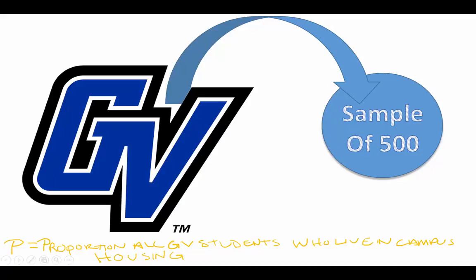So P equals the proportion of all GVSU students who live in campus housing. P is the notation, my population is all Grand Valley students, and the success or particular value I'm interested in is if they live in campus housing.